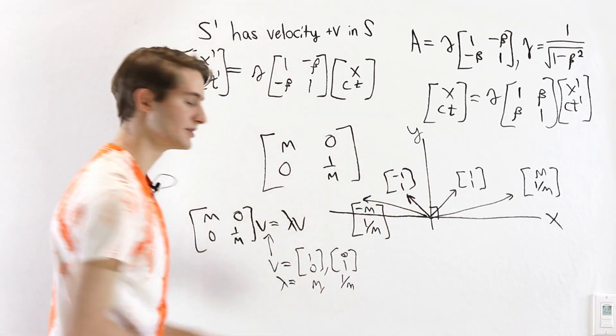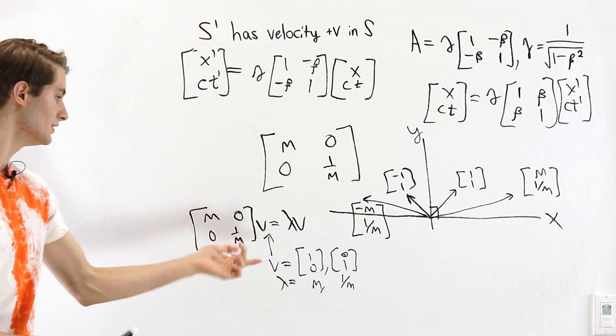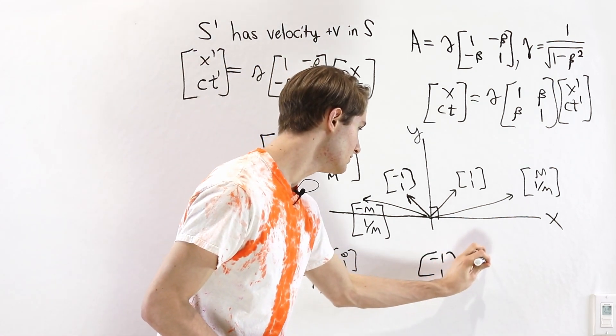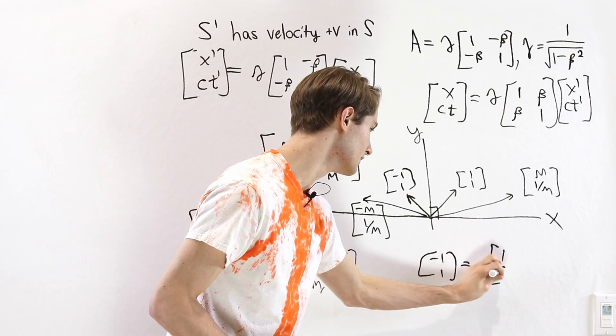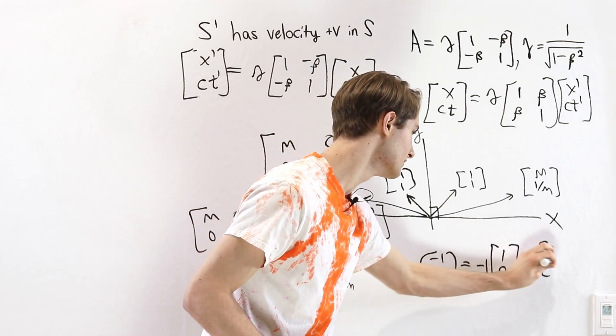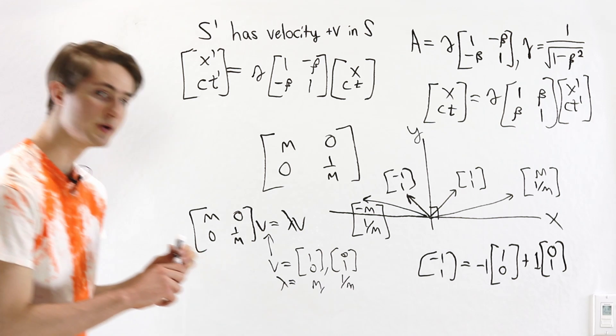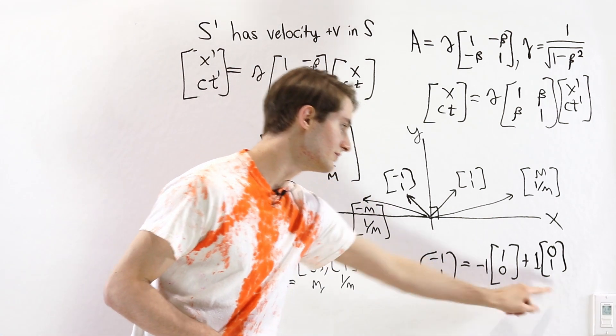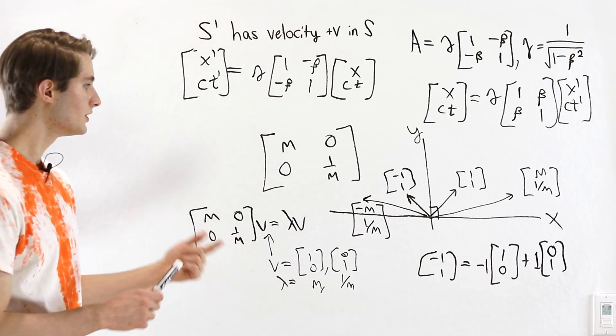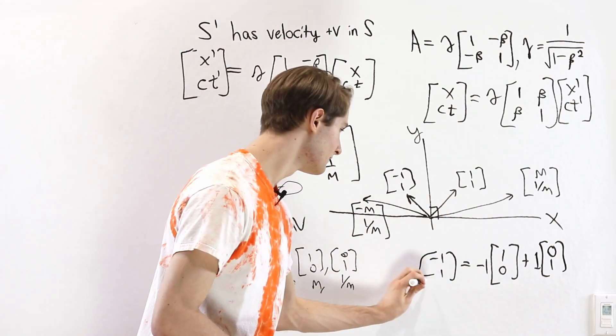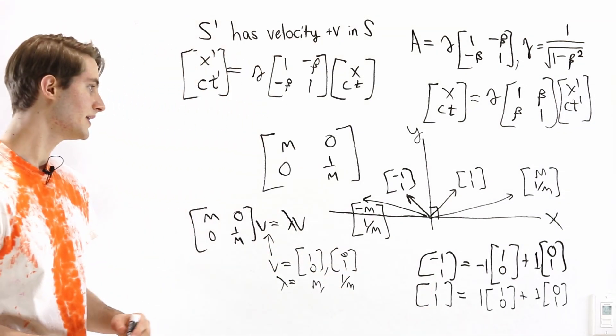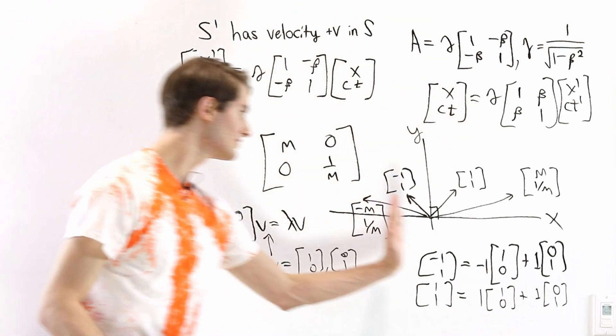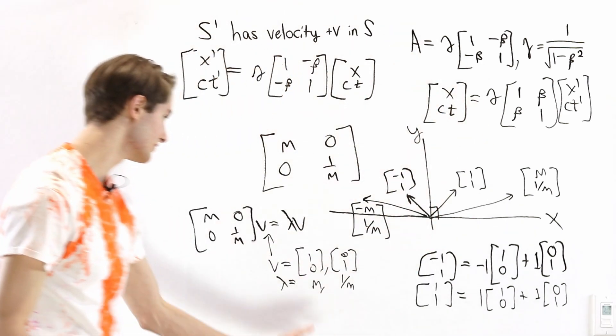Now we can write any one of these vectors as a linear combination of the eigenvectors. For example, negative 1, 1, this is equal to negative 1 times 1, 0, plus 1 times 0, 1. And when we apply the matrix, we can think about applying it separately to each of these vectors. Now, if we look at the vector 1, 1, that is the same vector as negative 1, 1, except we flip it about this vertical axis, the axis of that second eigenvector 0, 1.